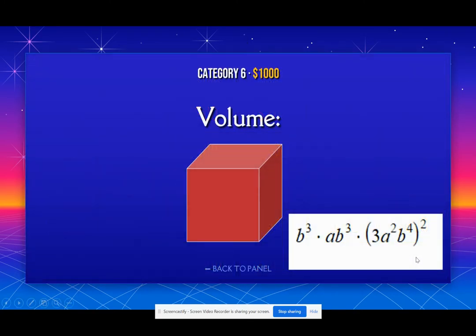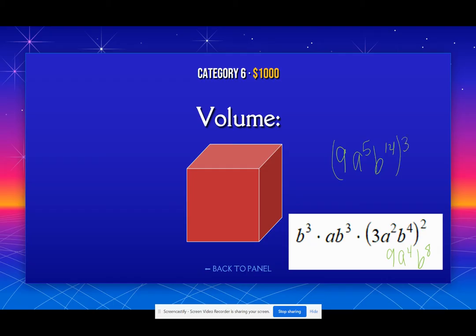Let's look at a volume problem — this is a big one. 3 squared becomes 9; A squared squared is A to the 4th; this is B to the 8th. Combine what we can: 9, A to the 4th and A gives A to the 5th, and B to the 8th through B to the 14th. That's my side length. Now I need to cube it because it's the volume of a cube — volume is side cubed. 9 times 9 times 9 gives 729; A to the 5th times 3 gives A to the 15th; and 14 times 3 gives B to the 42nd. A lot of these are the same processes over and over — it's about memorizing the rules: scientific notation rules and exponent rules.